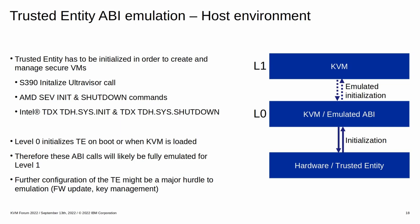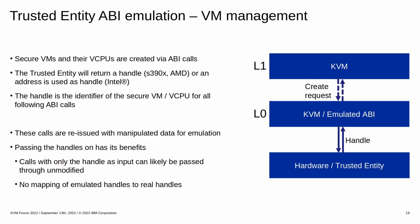Let's have a closer look at the emulation. The trusted entity has to be initialized in order to manage secure VMs, so initialization is one of the first API calls to be executed. Only the KVM with direct API access — i.e. level 0 — initializes the real trusted entity, which means any initialization by level 1 has to be fully emulated. Secure VMs and vCPUs are also created via ABI calls, and the requester receives some form of handle which acts as a secure resource ID in response.